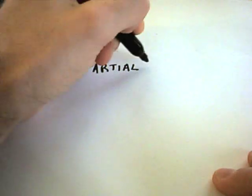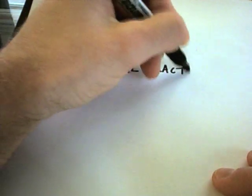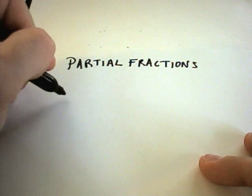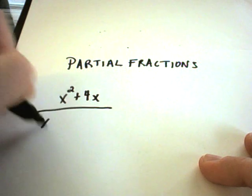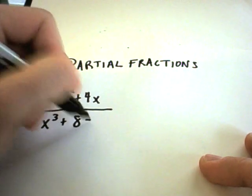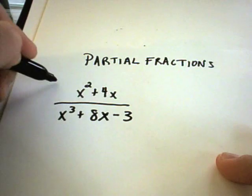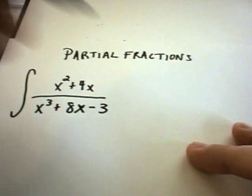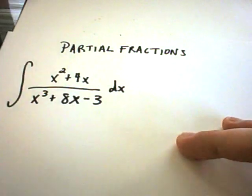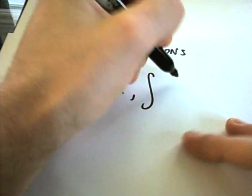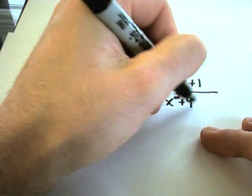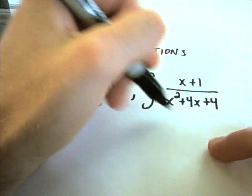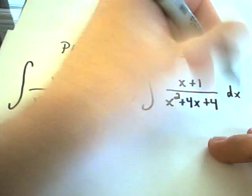Partial fractions is used for integrating rational functions — polynomials over polynomials. For example, x squared plus 4x divided by x cubed plus 8x minus 3, or x plus 1 over x squared plus 4x plus 4. Both of these are rational functions that we could integrate using partial fractions.